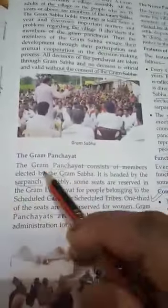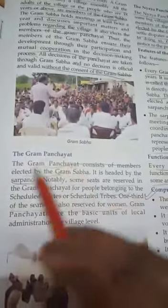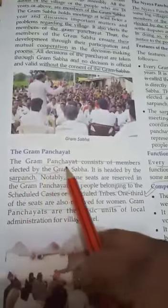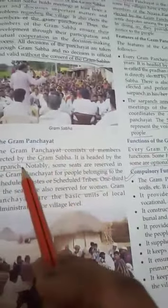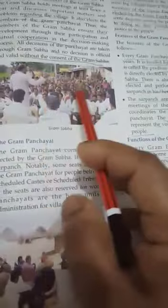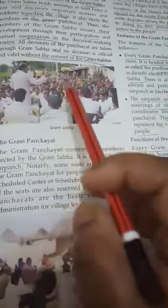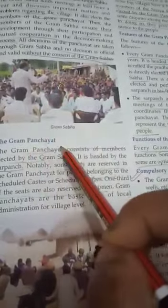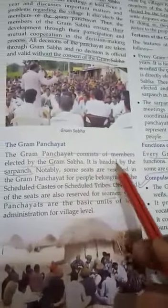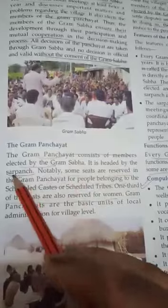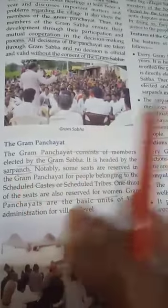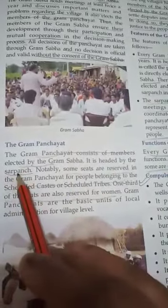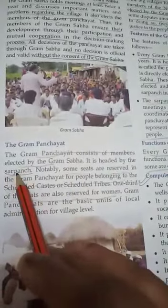Now comes the Gram Panchayat. The Gram Panchayat consists of members elected by the Gram Sabha, and it is headed by a Sarpanch. There are five members, and the head among them is called the Sarpanch.